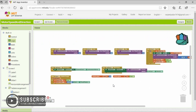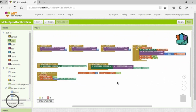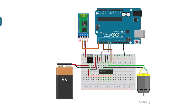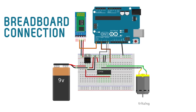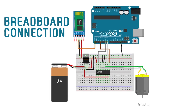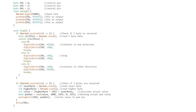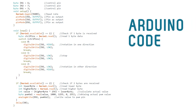With that, we have completed the app. Build it and install it in your Android device. This is the breadboard connection of all the parts, and this is the code that will be uploaded to the Arduino.